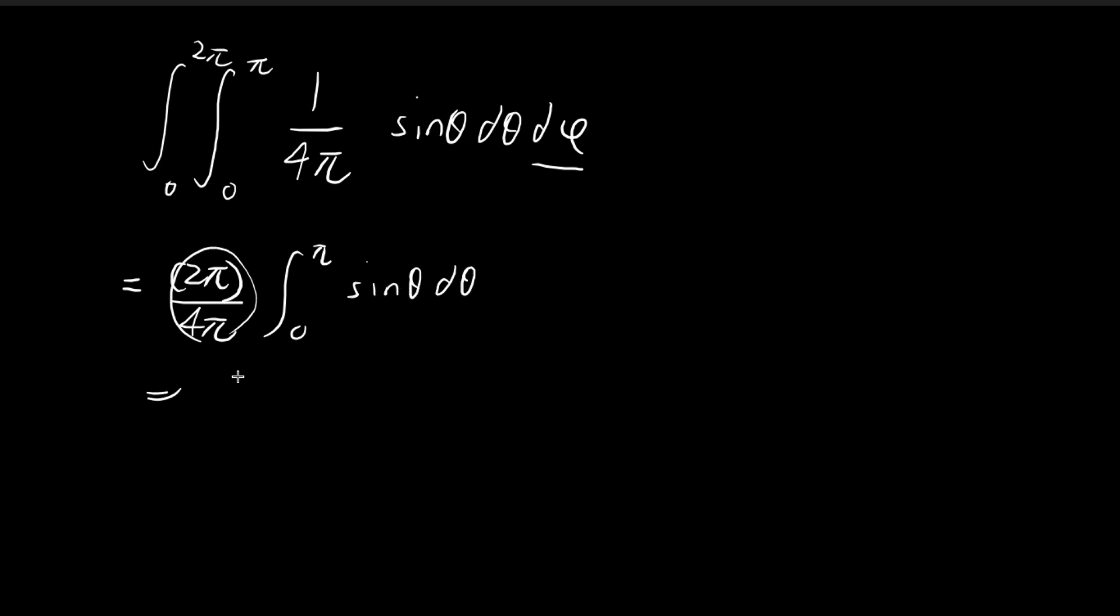So this is, of course, 1 half. And integrating this, we get negative cosine of theta. Evaluate it from 0 to pi.